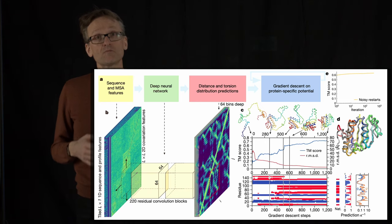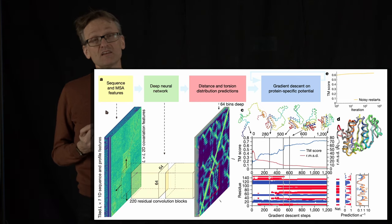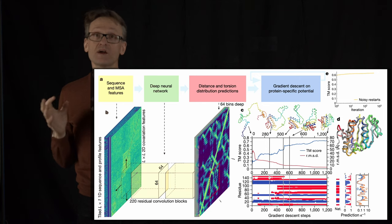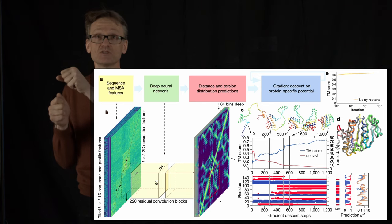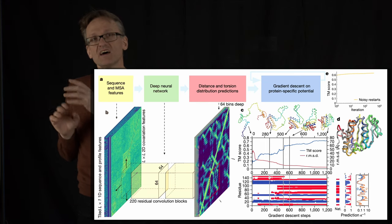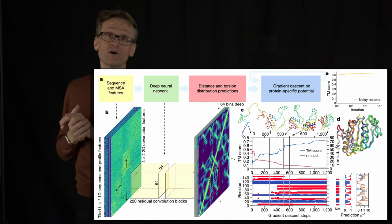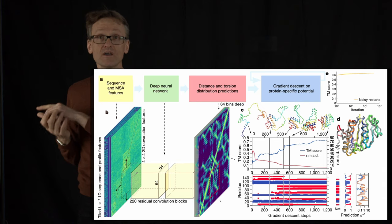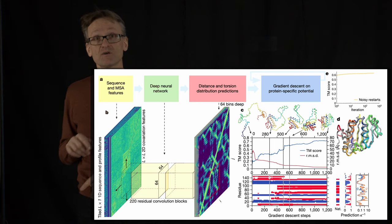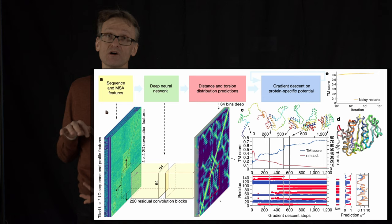What they did for proteins is they trained networks to predict all the pairwise distances between residues, usually C-betas but that's a detail. If you have a protein with 100 residues, that is a matrix with 100 by 100 pairwise distances, think of that as the green one.